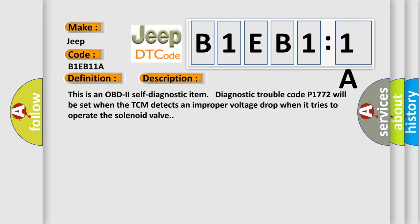This is an OBD-II self-diagnostic item. Diagnostic trouble code P1772 will be set when the TCM detects an improper voltage drop when it tries to operate the solenoid valve.